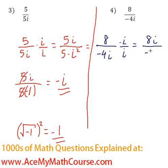And we get 8i over negative 4i squared. Now, I just mentioned that i squared is negative 1. So we're going to have negative 4 times, whoops, negative 1.